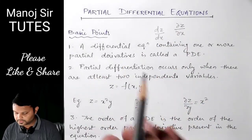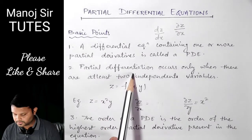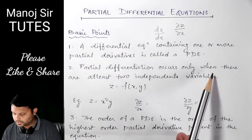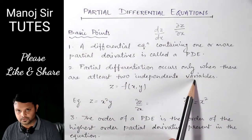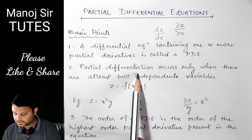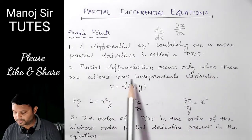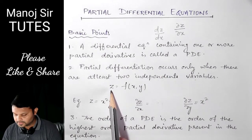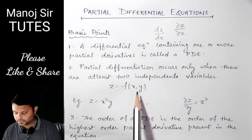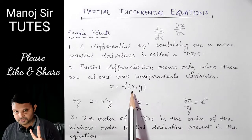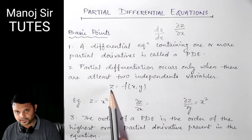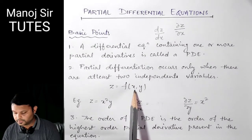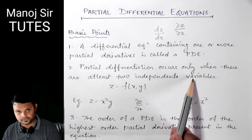Why do we use this DEL? Partial differentiation occurs only when there are at least two independent variables. That is, when Z is a function of X and Y — these two, X and Y, are known as independent variables.